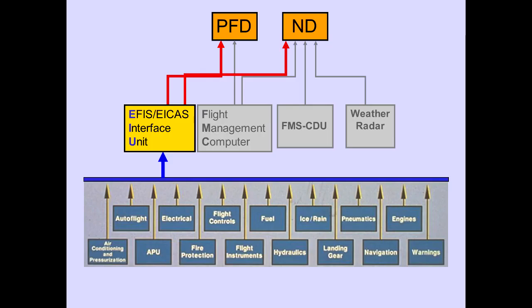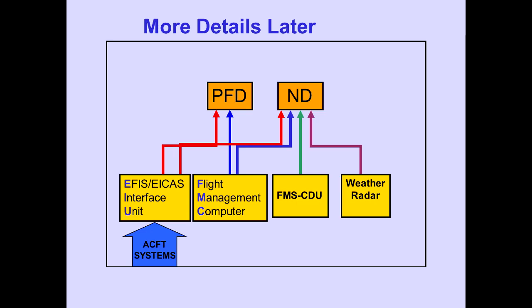The EIU receives information from various airplane systems and supplies processed information to the PFD and ND. The flight instrument modules will discuss PFD and ND inputs in more detail.